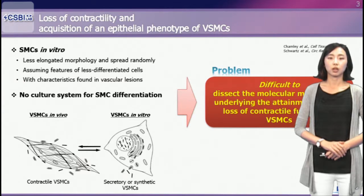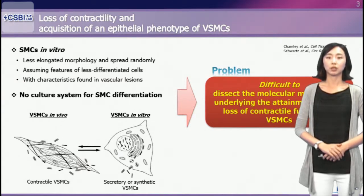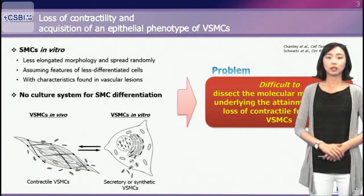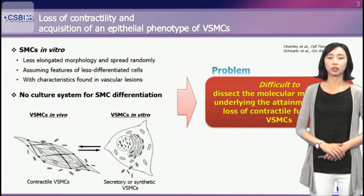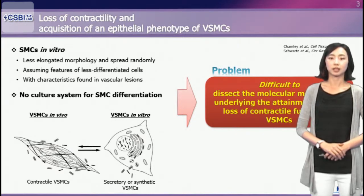Along with in vitro cultures, primary VSMCs gradually assume features of less differentiated cells with characteristics found in vascular lesions. VSMCs grown in vitro exhibit a less elongated morphology and spread randomly on cultured surfaces without an organized structure. Despite widespread appreciation of the concept of VSMC phenotype alteration toward less differentiated cells, there remains no cell culture system for the differentiation of SMCs. The absence of such a culture system has made it difficult to dissect the molecular mechanisms that underlie the attainment and/or loss of contraction function of VSMCs.